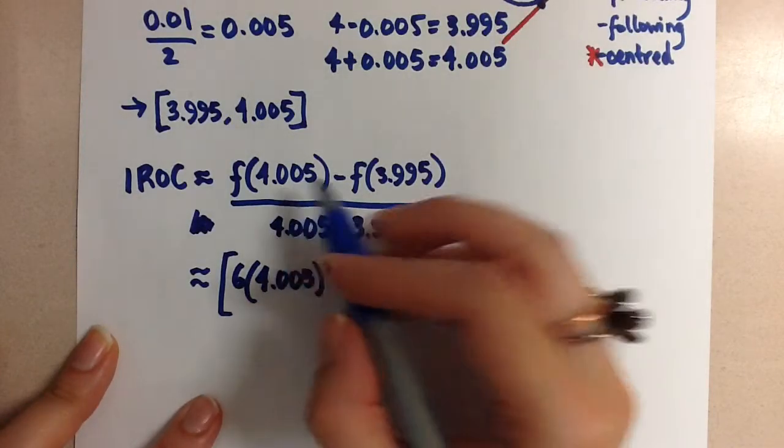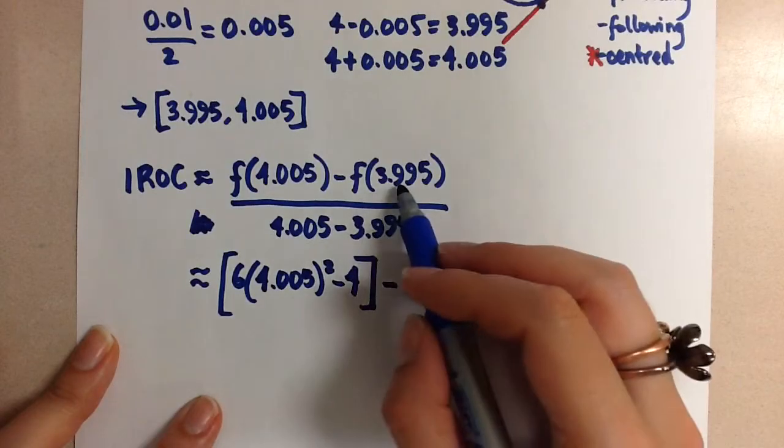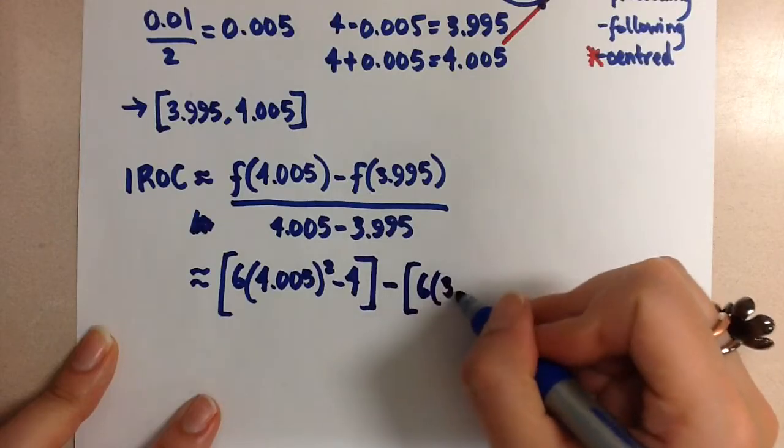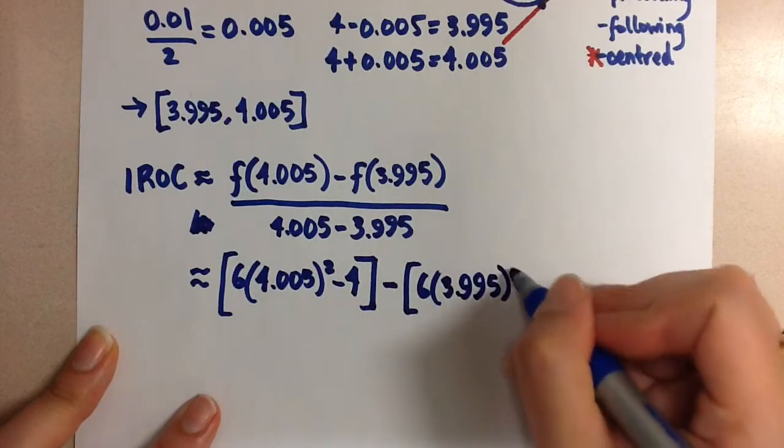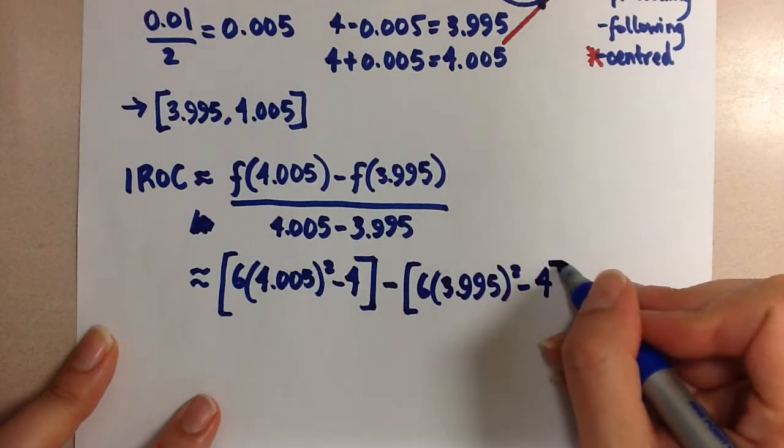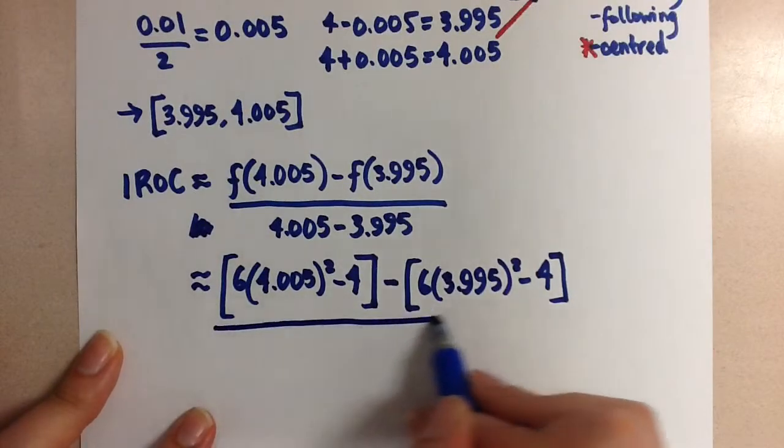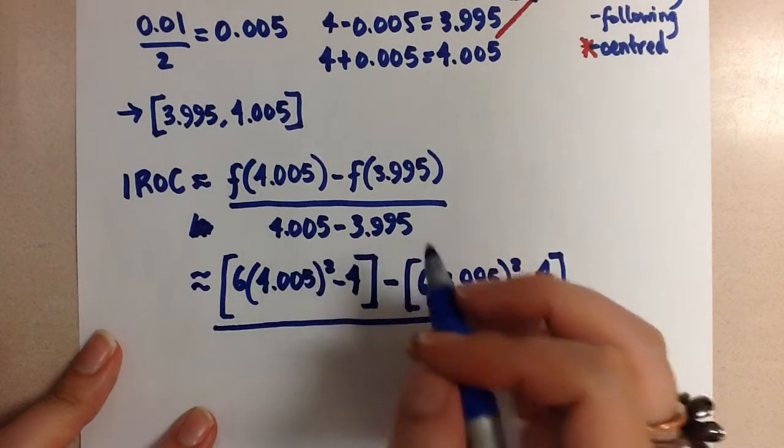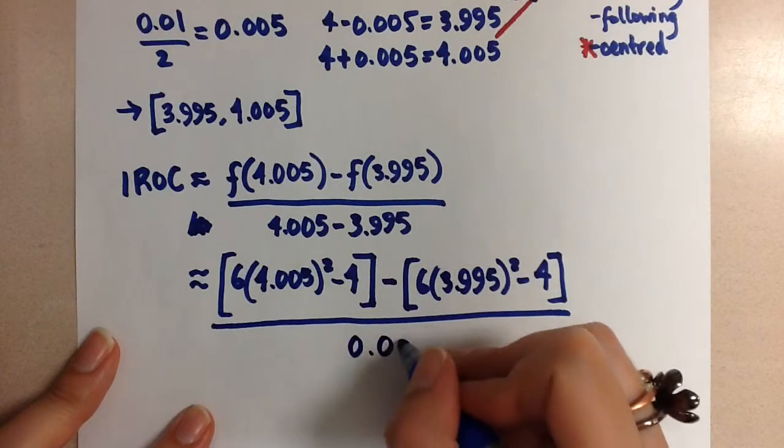So that's f at 4.005 minus f at 3.995, which is going to be 6 times 3.995 squared minus 4. And then over 4.005 minus 3.995 is 0.01.